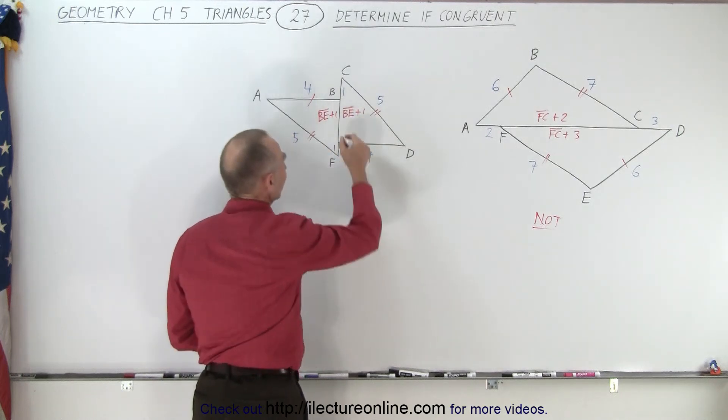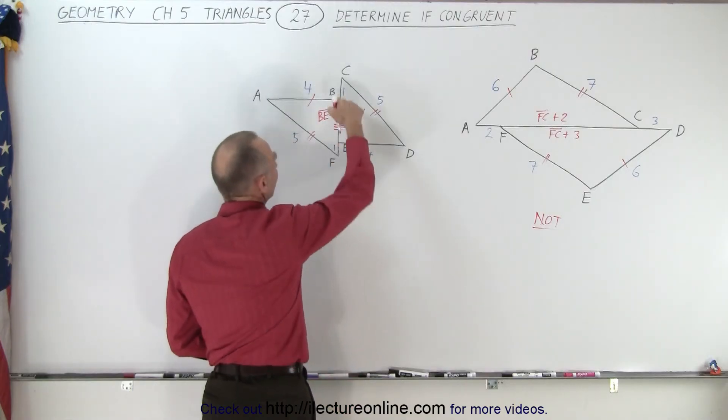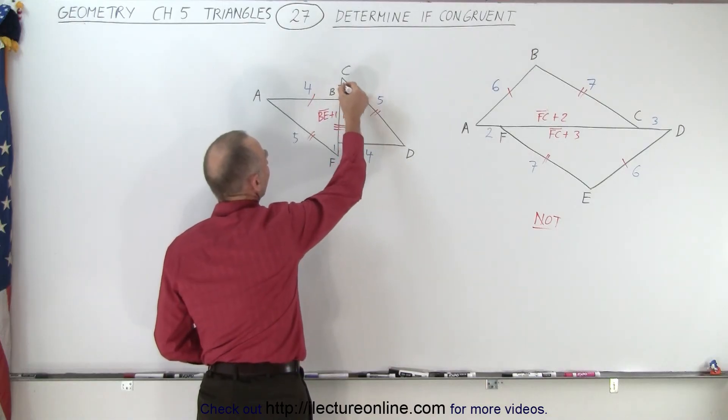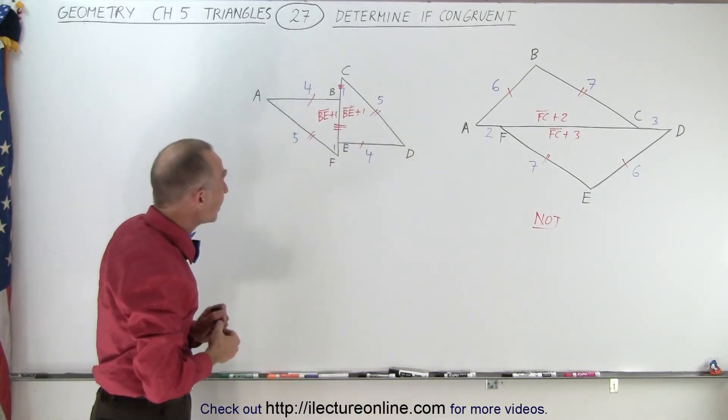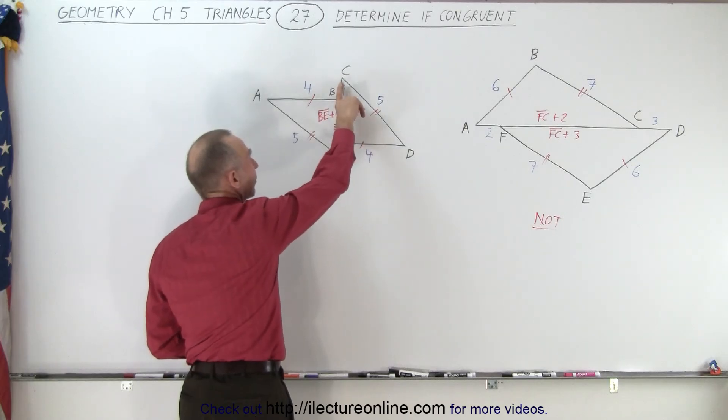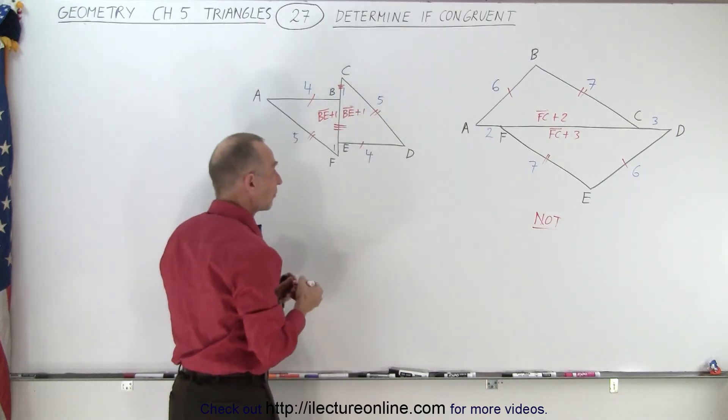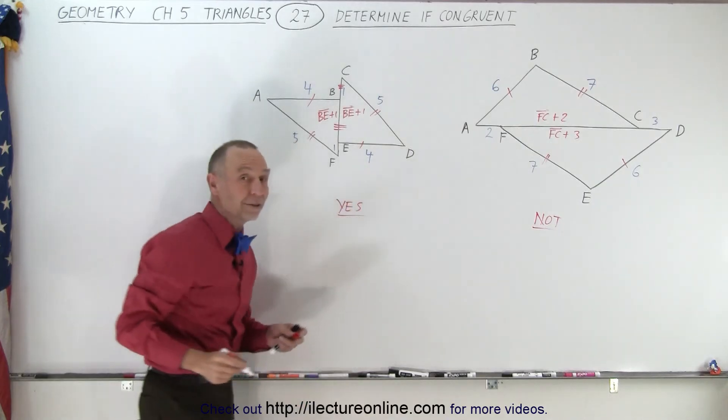And notice they're exactly the same. So therefore this, well that would be for this triangle right here, is the same as that for that triangle. It's kind of hard to mark it that way, but you can see here indeed that the length of this side for this triangle is the same as the length of this side for that triangle, and therefore, yes, they are congruent triangles.